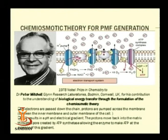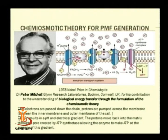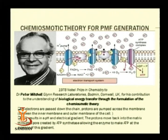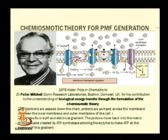According to the chemiosmotic theory, when protons are taken up by different carriers from the cytoplasm, water molecules are split, forming H⁺ and OH⁻. H⁺ attaches to the carrier, and protons accumulate on the outer side of the cytoplasmic membrane. Due to this, there is a difference in charge — the outer side of the cell becomes more acidic and positively charged, while the inner side accumulates OH⁻ ions.